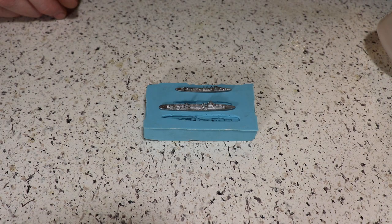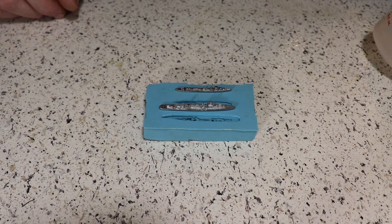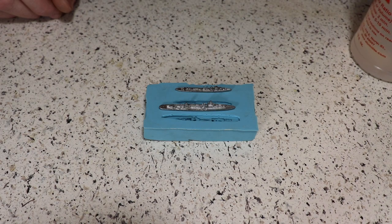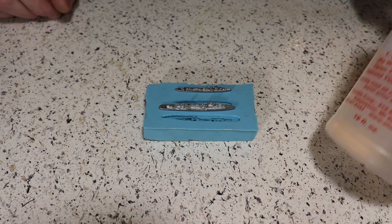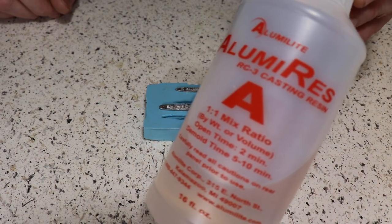First off, what we use. I found this stuff at Hobby Lobby or Michael's, I get them mixed up sometimes. I know they carry the same things, just sometimes they have different quantities. This is called Alumilite, and what this is is a two-part pour which is 50/50, and then you just pour it into the mold.